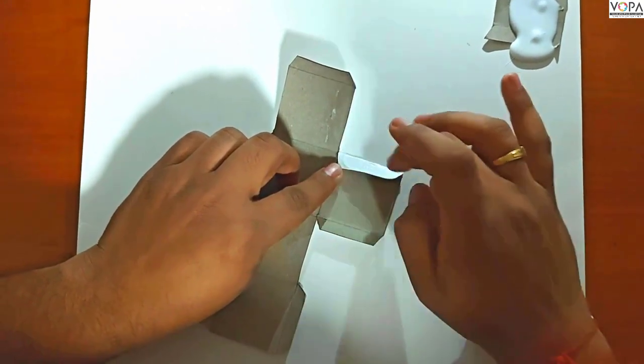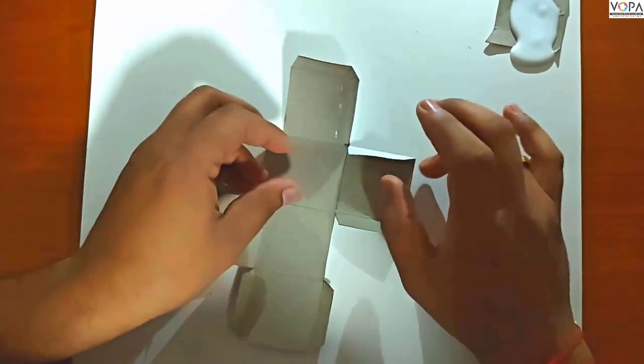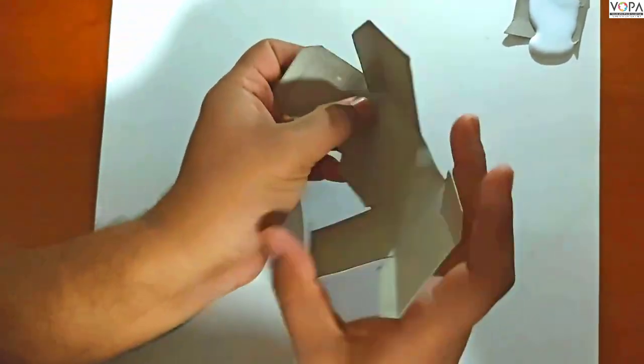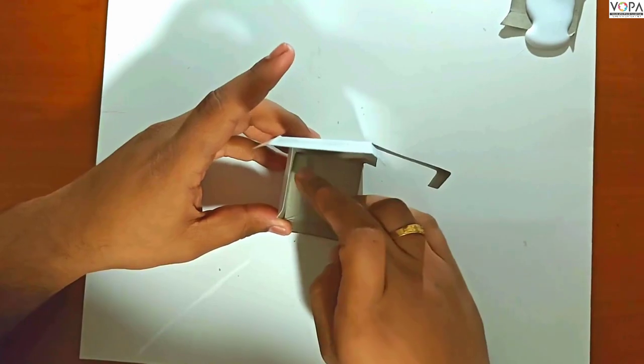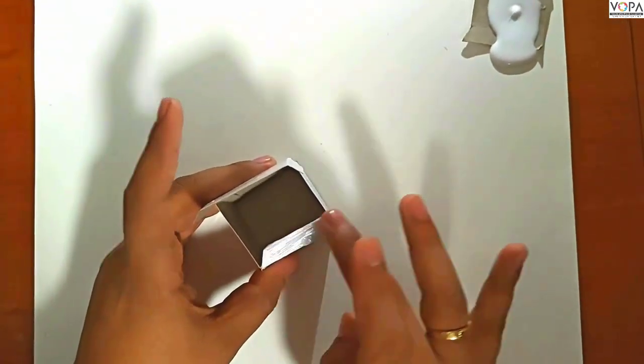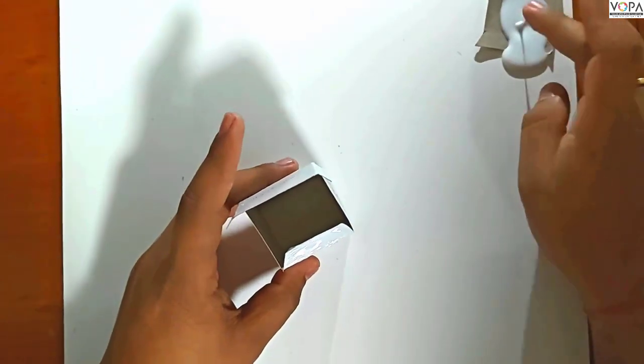Now put some glue on the flaps of one net and stick them onto the sides to make a cube. Let the glue dry.